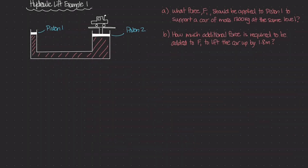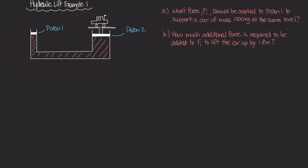Welcome to our first example on hydraulic lifts. This is going to be a pretty straightforward example, and it's probably a break from all the theory and equation derivation that we've been doing. In this example, we have a hydraulic lift, and on the left side we have piston one, and then we have piston two, which is holding up this very poorly drawn car.